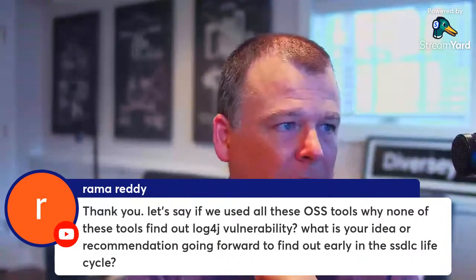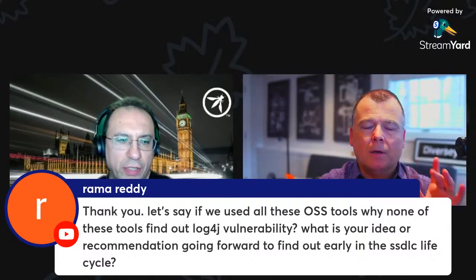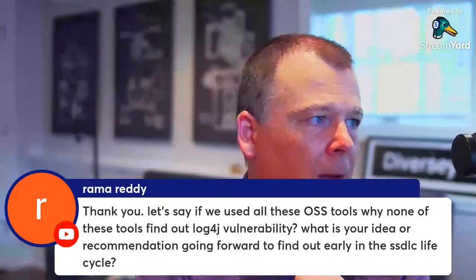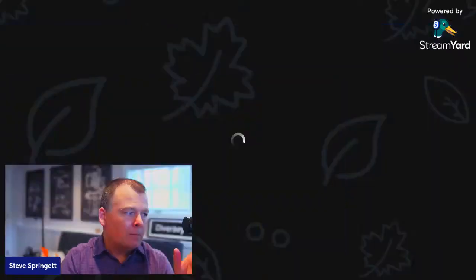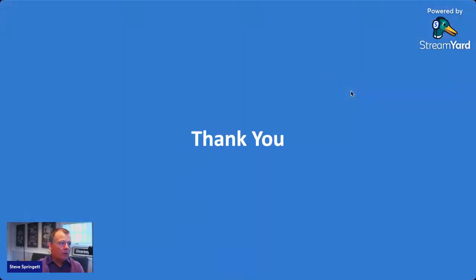The demo gods were good to me. Here are some links for Dependency Track — the websites as well as our GitHub. We use the OWASP Slack workspace with a Dependency Track project channel that everyone is welcome to use. There's also our Twitter feed. Thank you — I wish I was there in person, but if there are any other questions, maybe Jeff and I can answer them together.